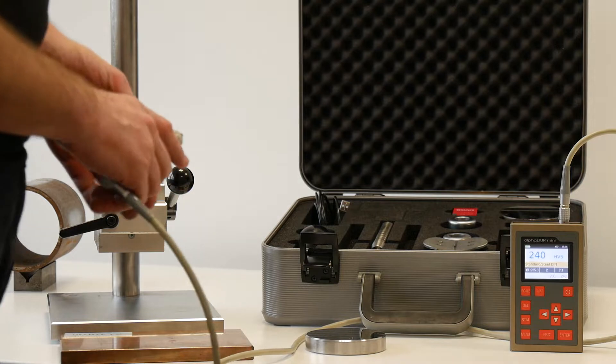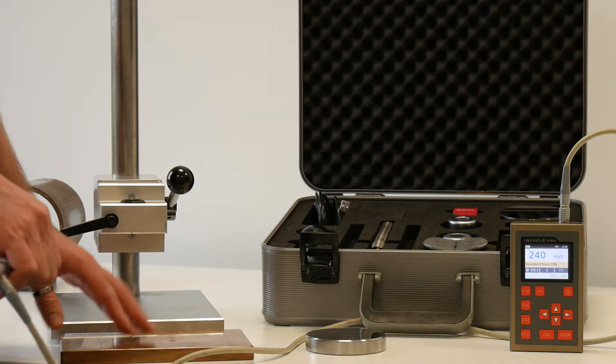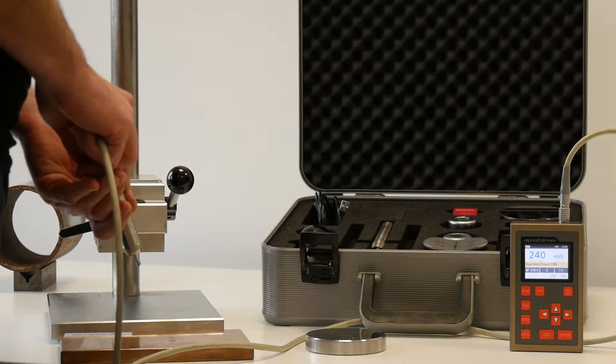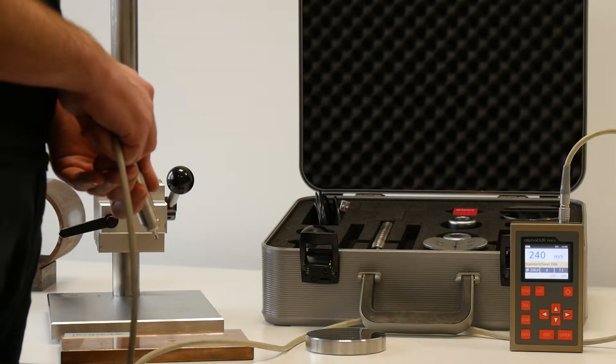If you want to make measurements on other samples, like on this copper plate, its hardness is approximately 85 Vickers, then you will need to make a material calibration.